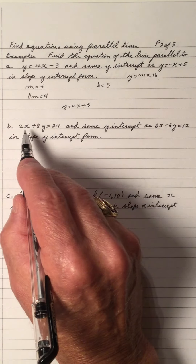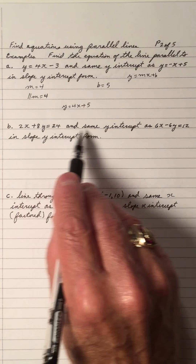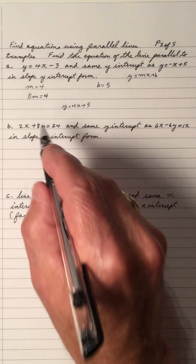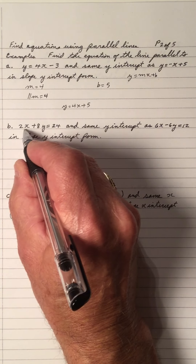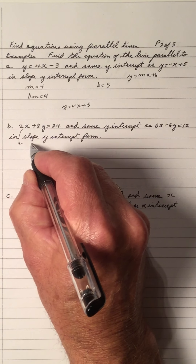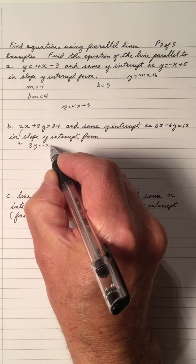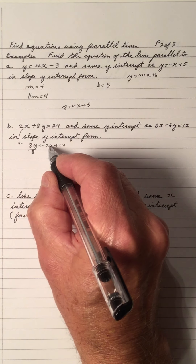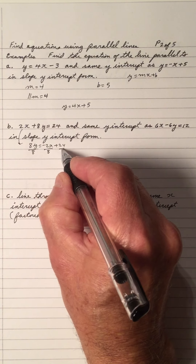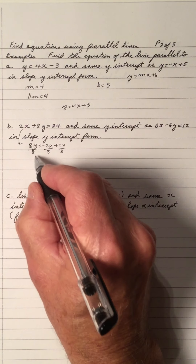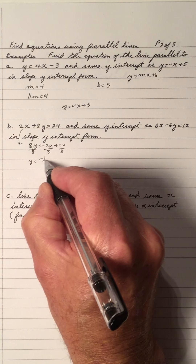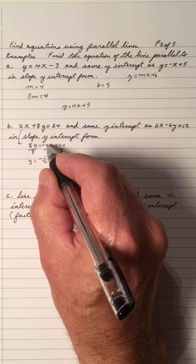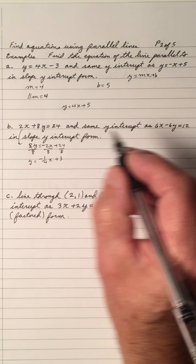Number 2: find the equation parallel to this line and the same y-intercept as this one in slope y-intercept form. Parallel to this one means we'll take this equation and solve it for y: y equals mx plus b. So the 2x moves to the left side to become negative. Divide all terms by 8, and we get negative 1 over 4x plus 3. Notice 2 and 8 gives us 4.